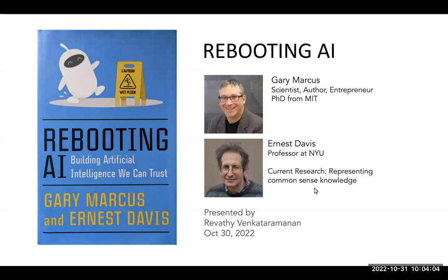Children's over-regularization is one of the examples included in the book and in the slides. Ernest Davis is currently a professor at NYU whose research focuses on representing common sense knowledge and reasoning. He has a lot of materials put together available on his website, which is definitely worth checking out.